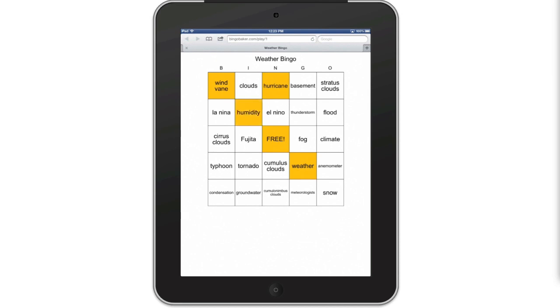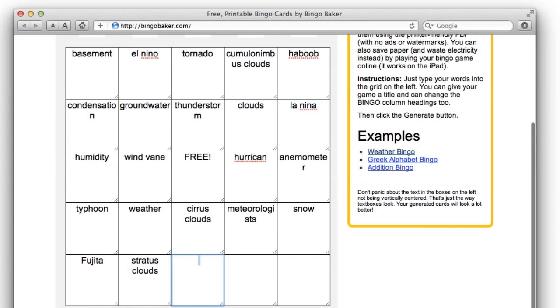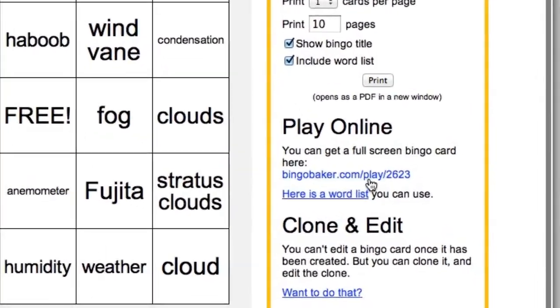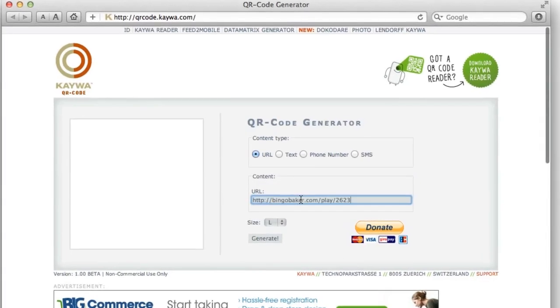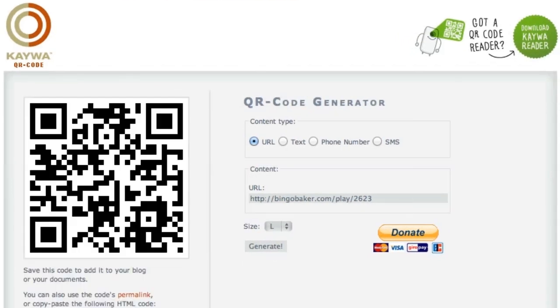Actually, anyone can make a bingo board at bingobaker.com. Simply type in all of your words and click generate. You could print a set of cards, but even better is using the supplied URL to play online. Copy that URL and paste it into a QR code generator and you've got a QR code that leads to a bingo board. And it's so cool that each time it's scanned, it generates a different board.